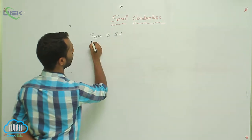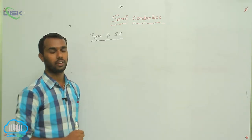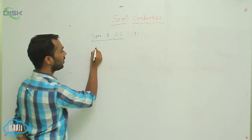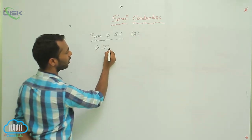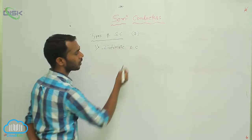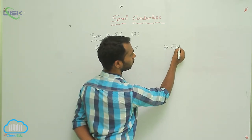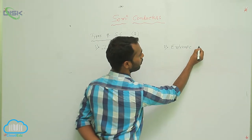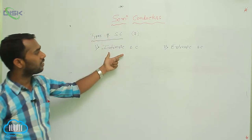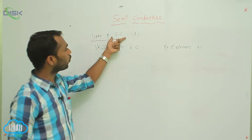Semiconductors are generally two types: intrinsic semiconductors and extrinsic semiconductors. What are the examples for semiconductors?